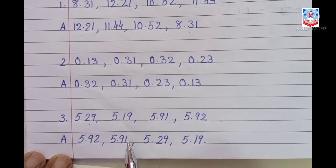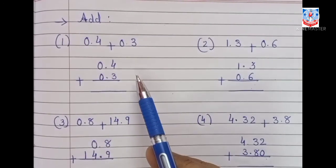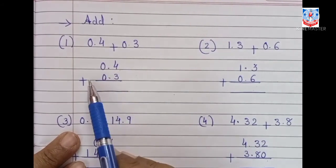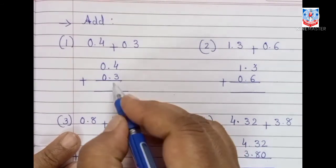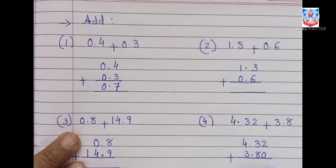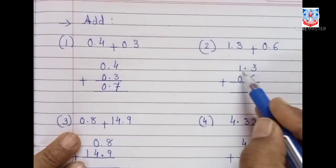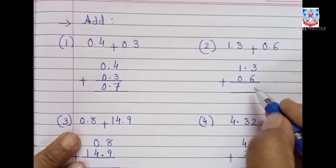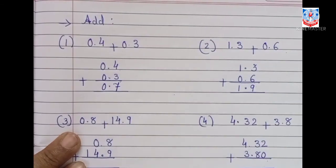Now, addition of decimals. 0.4 plus 0.3: align the decimal points, 4 plus 3 is 7, place the decimal point, and 0 plus 0 is 0 — so the answer is 0.7. Next, 1.3 plus 0.6: 3 plus 6 is 9, place the decimal point, 1 plus 0 is 1 — so the answer is 1.9.